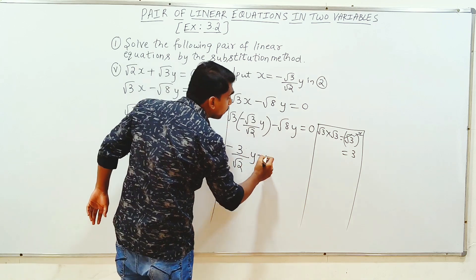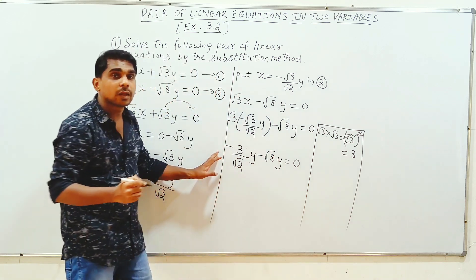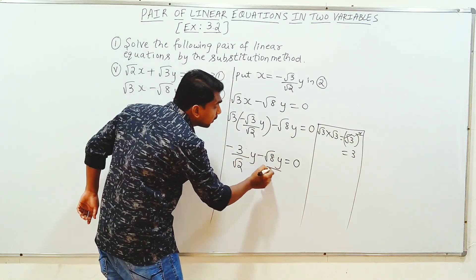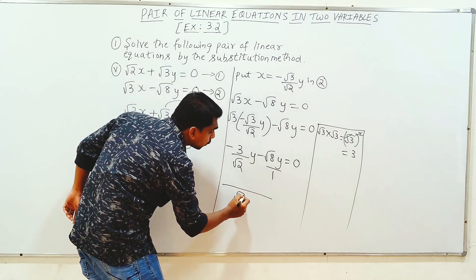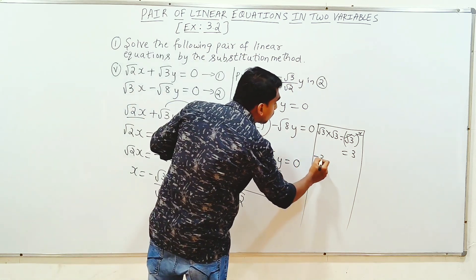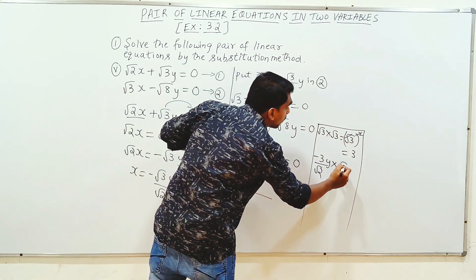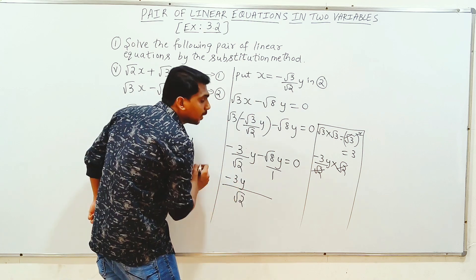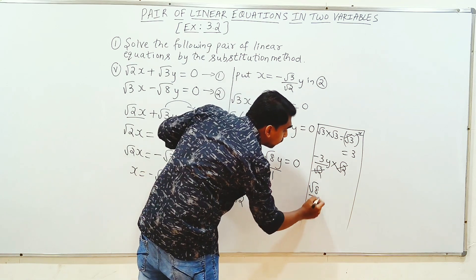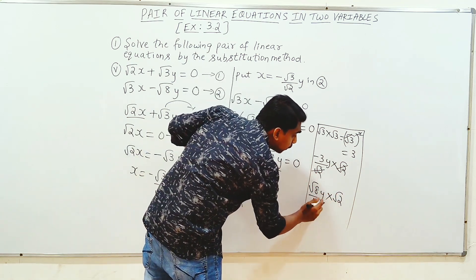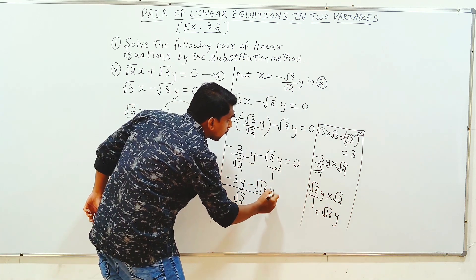Root 3 into root 3 is equal to 3. So we have minus 3 over root 2 minus root 8y is equal to 0. Now take LCM as root 2. Root 2 and root 2 cancel. The second number is root 8 by 1y into root 2. Root 8 into root 2 is root 16y.